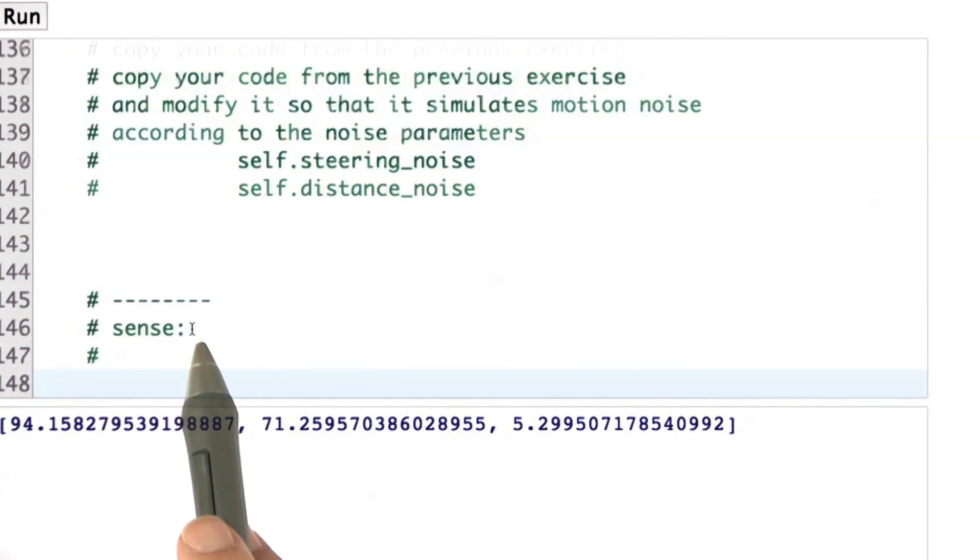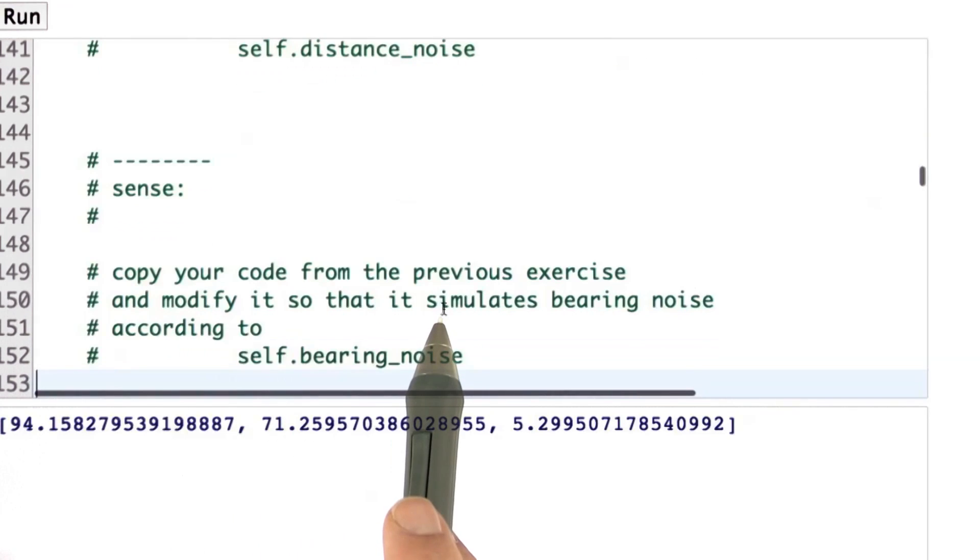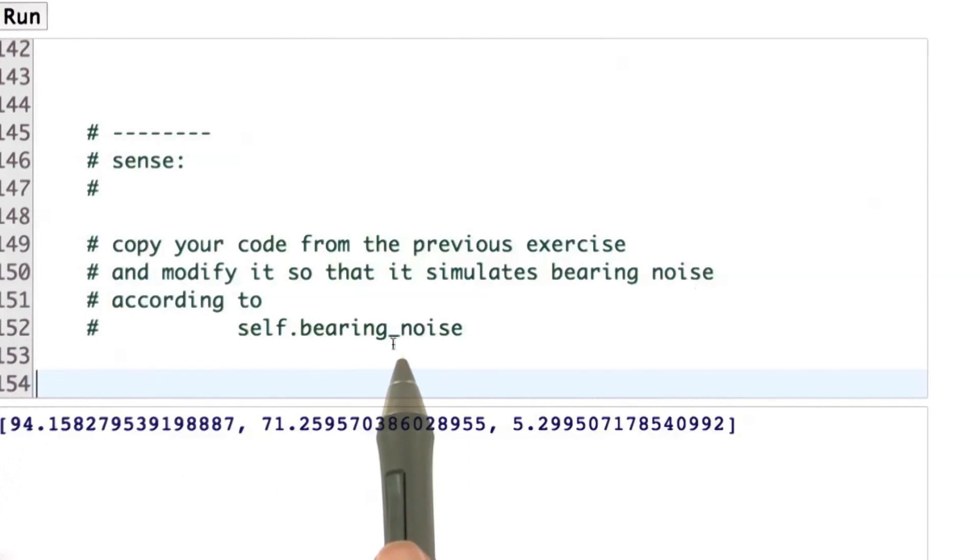Then you also have to plug in the sense function, and you also have to plug in a bearing noise and make sure there's a flag that allows you to switch off the bearing noise. And it should be an optional flag, so it should have a default value of the bearing noise being on, otherwise your code won't run.